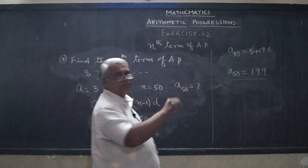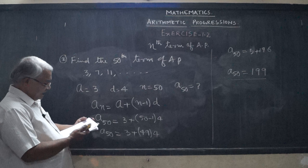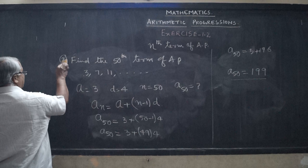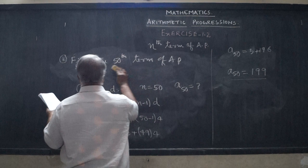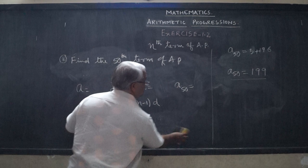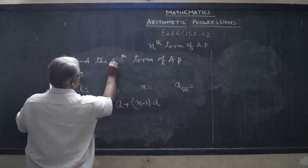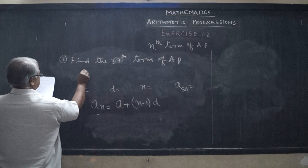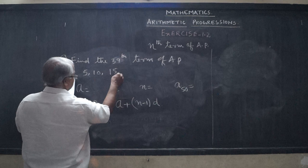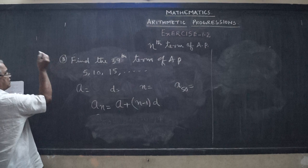Two problems done. Now we take another variety of problem. Third problem: Find the 39th term of the AP 5, 10, 15, and so on. Any number of problems we can do this way. The first term a equals 5.